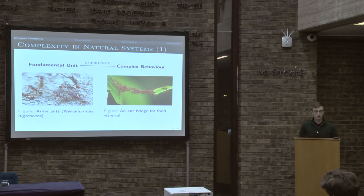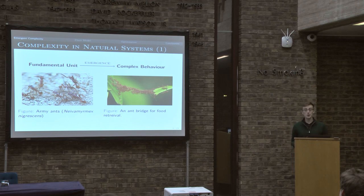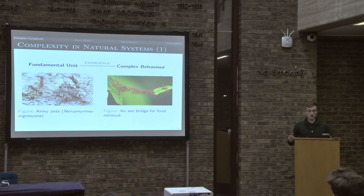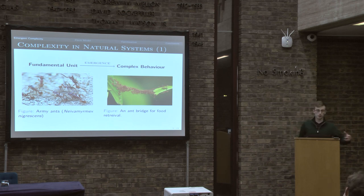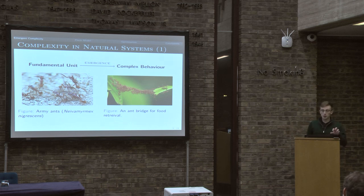Here's an example from nature: army ants, which are groups that cooperate in really interesting ways. One example is an ant bridge, where they link together to allow them to get food from areas. Natural selection is particularly interesting here because it generates algorithms that are really good for computer science in a way I'll talk about later.